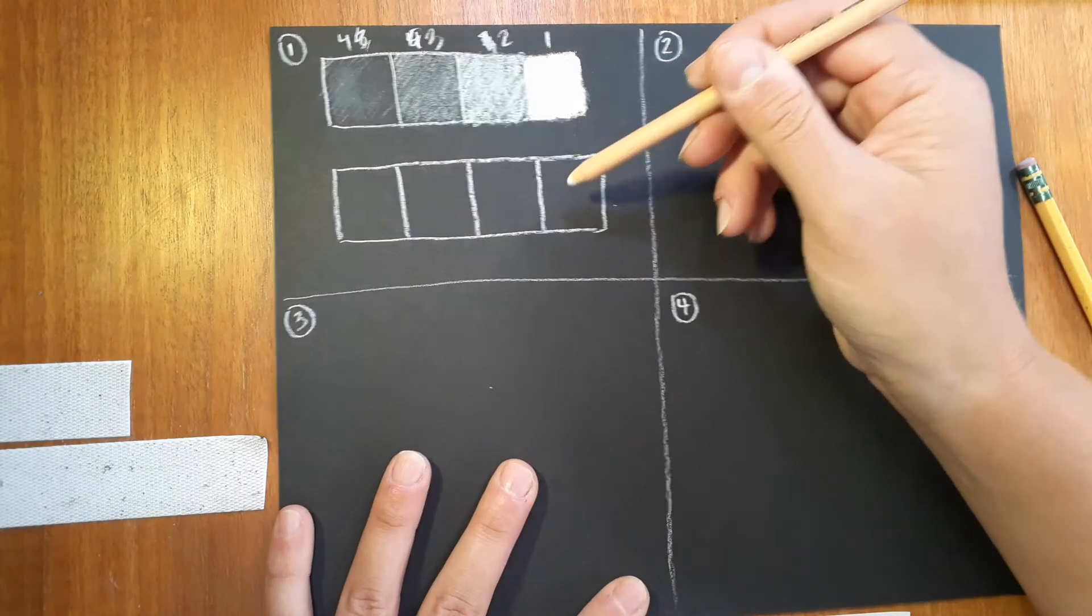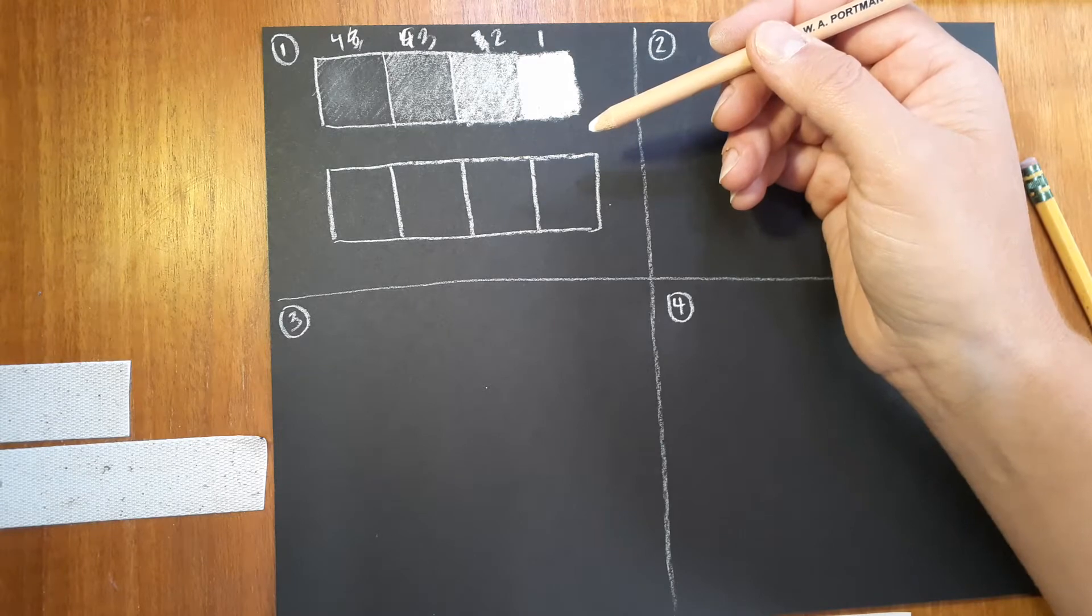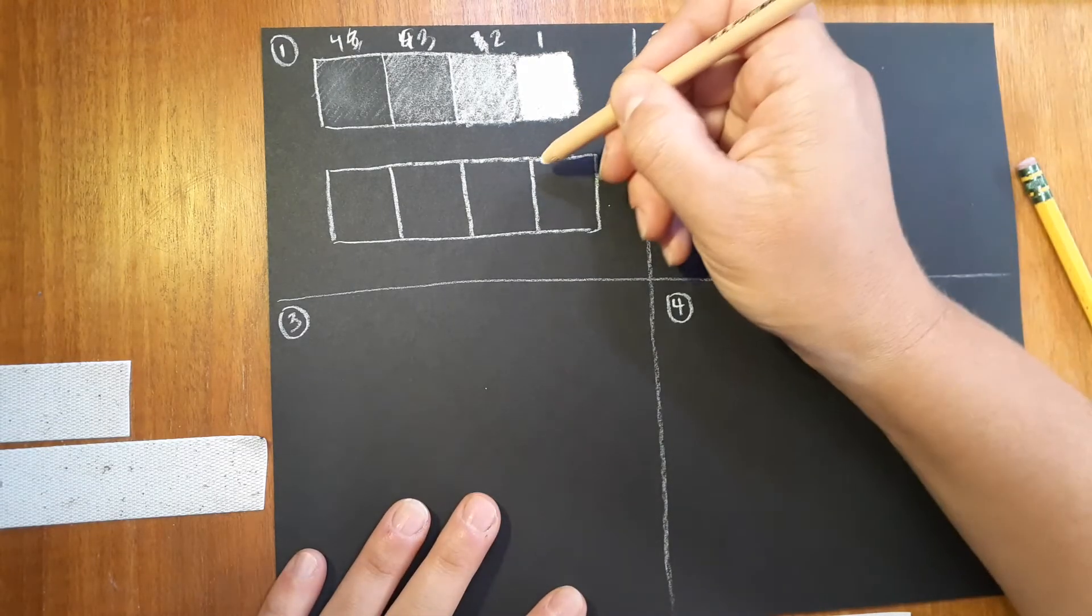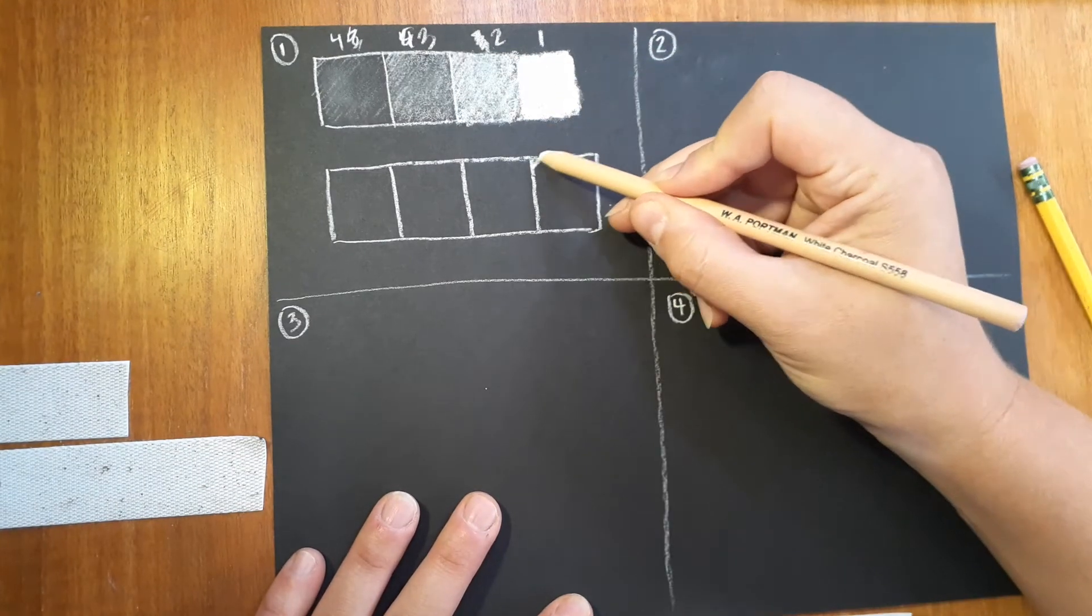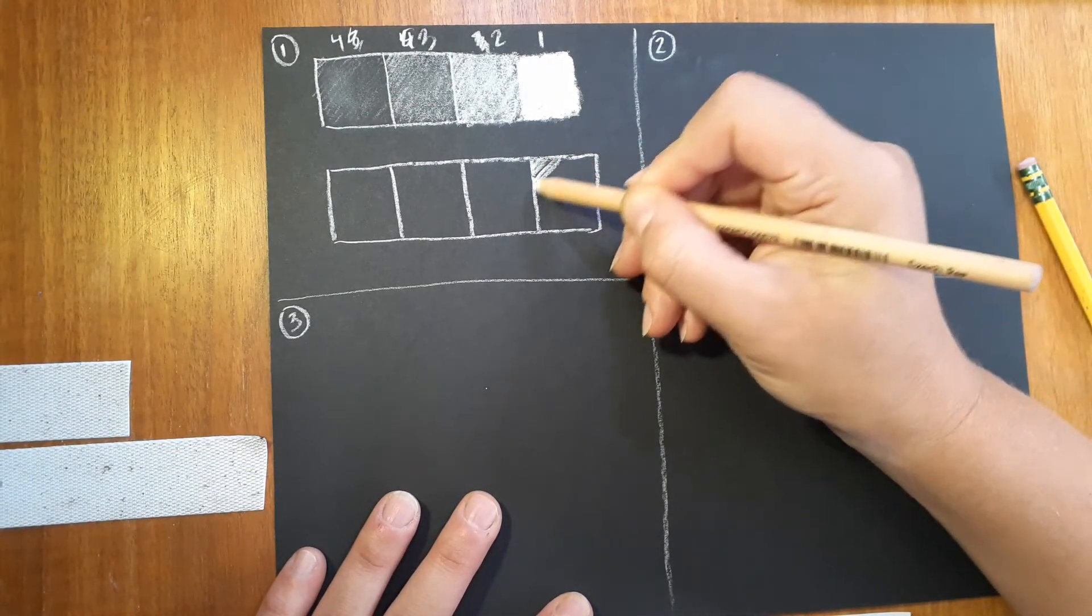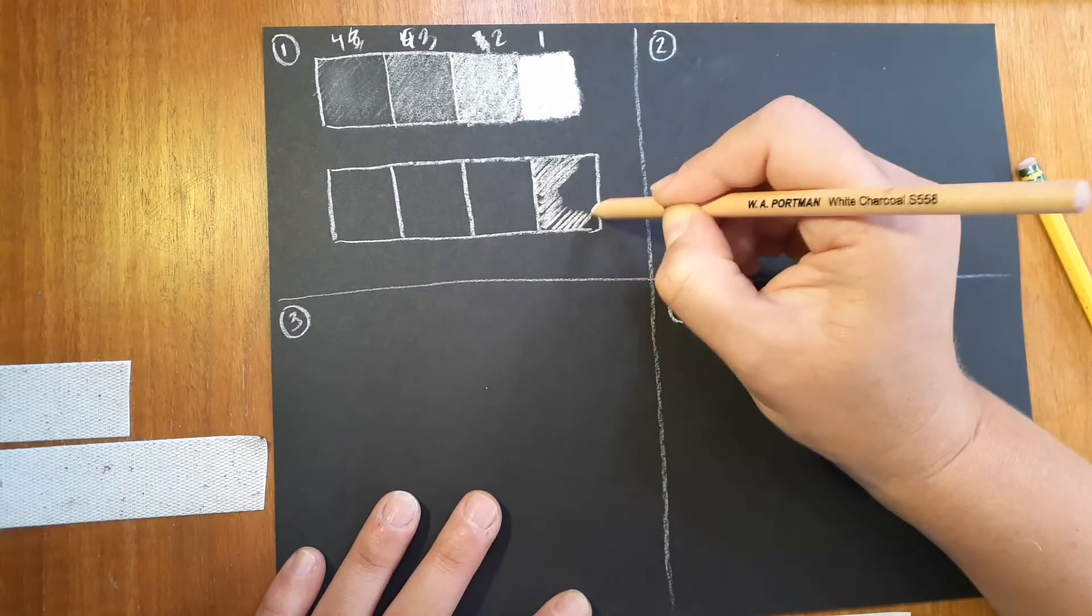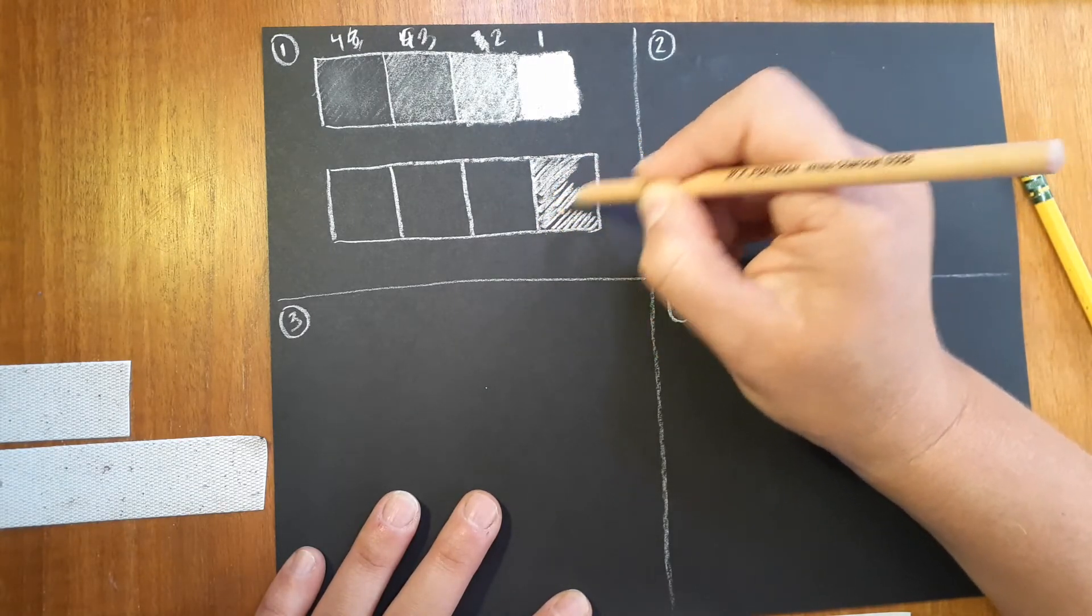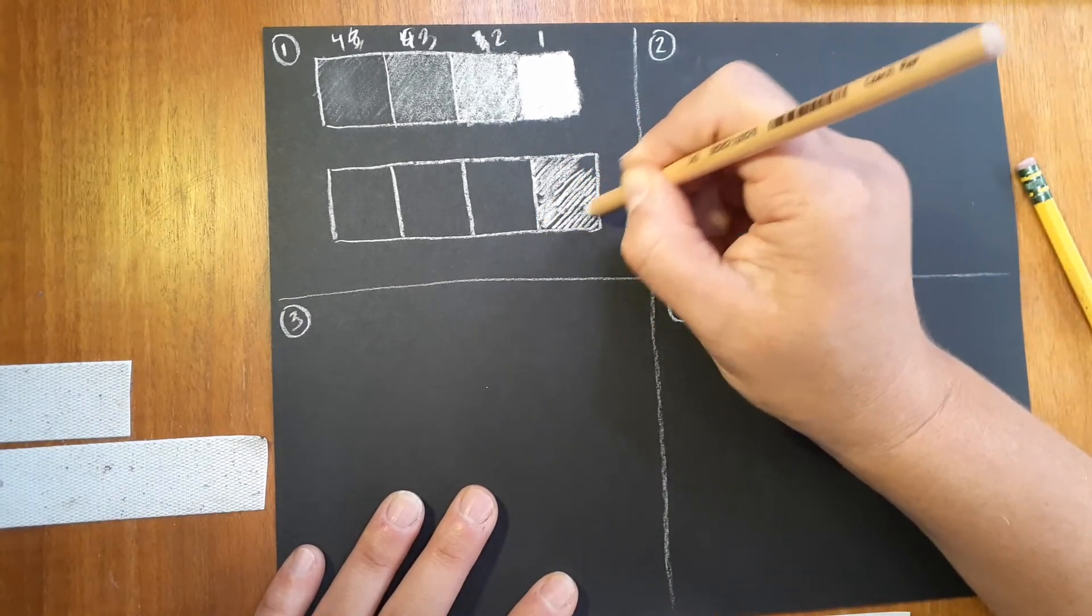I'm gonna do the same thing in the bottom one but I'm gonna use my hatching techniques. So remember, if we want something to in this case be the lightest, I'm gonna do my hatches as close together as I can get them, trying to keep them consistent. You might find that you need to sharpen your pencil at some point.